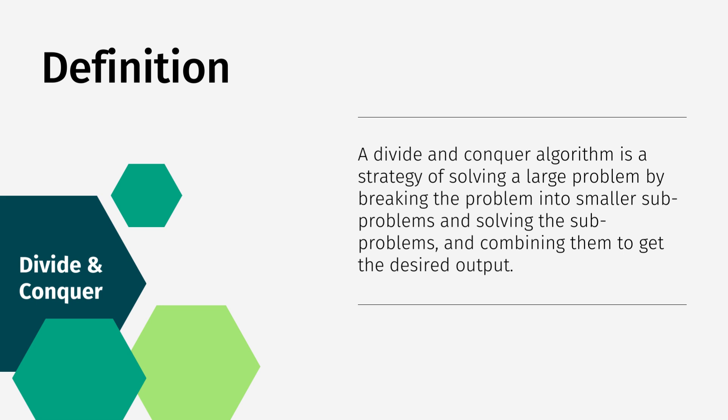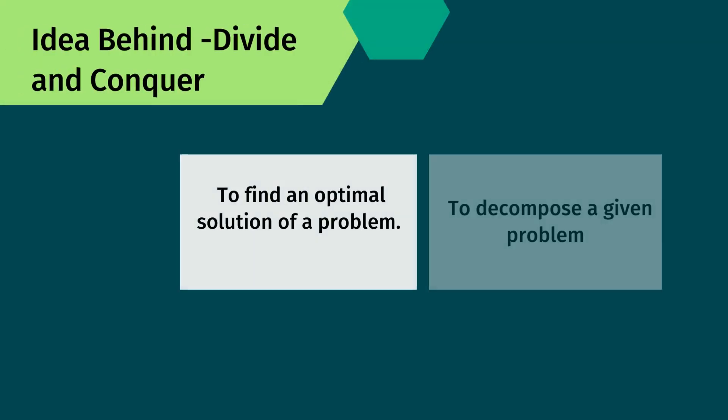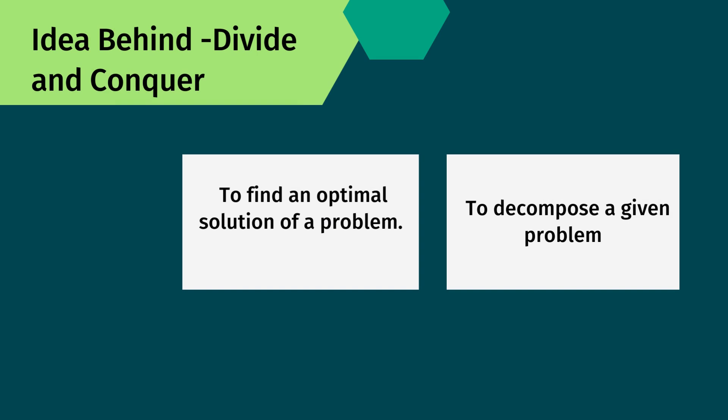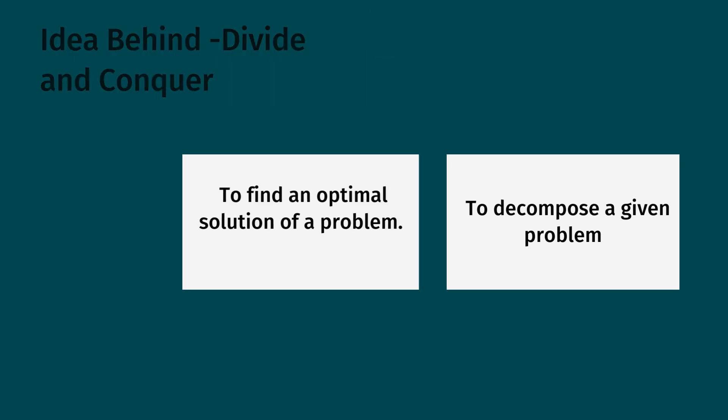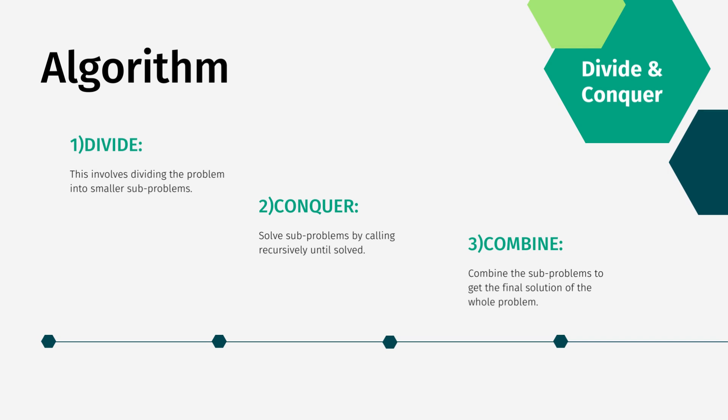The central idea behind the divide and conquer technique is to find the optimal solution for a problem. The basic idea is to decompose a given problem into two or more similar but simpler sub-problems, solve them in turn, and then compose their solutions to solve the given problem. This is the core idea behind the divide and conquer technique.